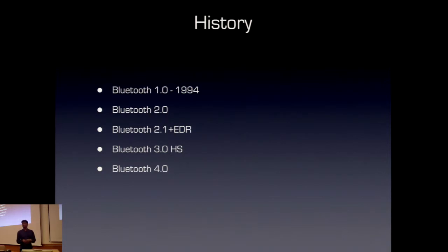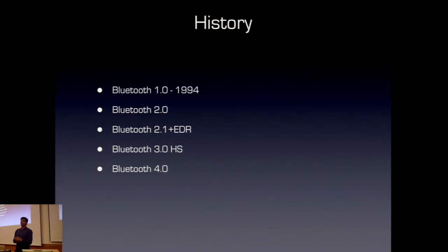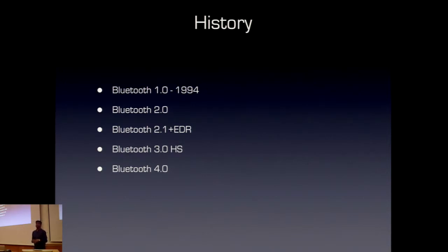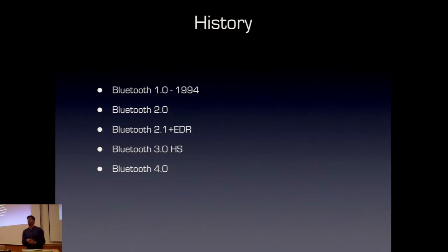That happened sometime in 2001. You started seeing mobile phones with Bluetooth headsets that let you stream voice to and from the speaker and microphone between the phone and the Bluetooth headset. Bluetooth 3 supported even higher data rates and was predominantly used for transferring files from one phone to another. There was a drawback to Bluetooth 3, and that drawback was power efficiency — Bluetooth was power hungry.